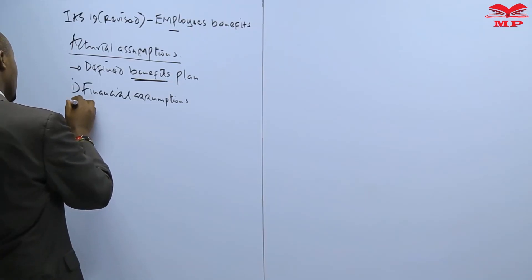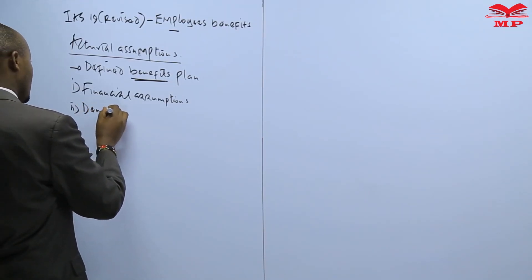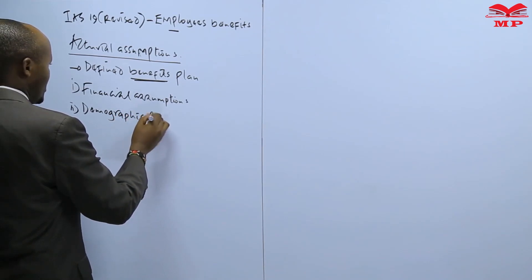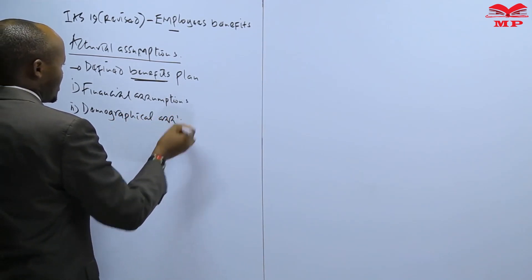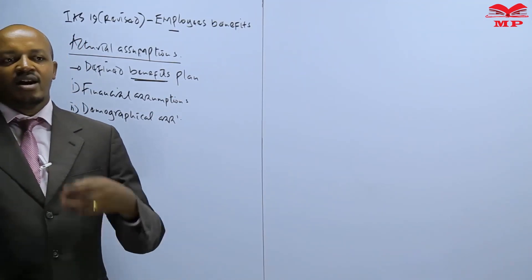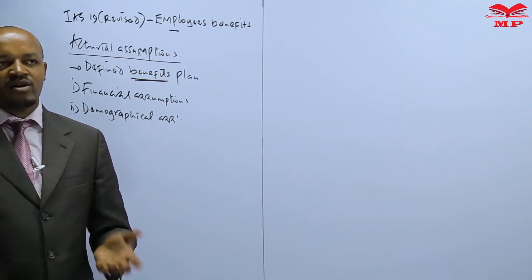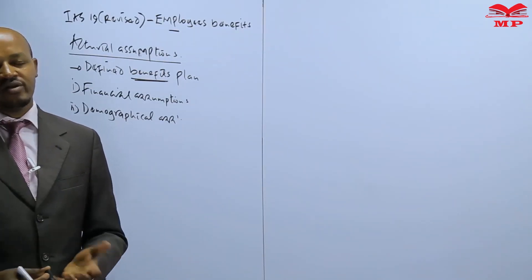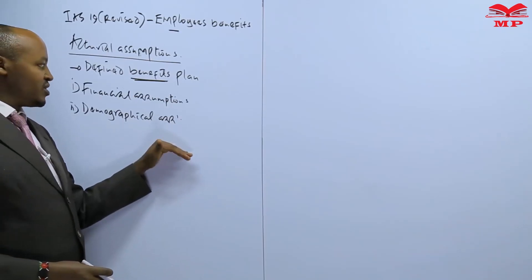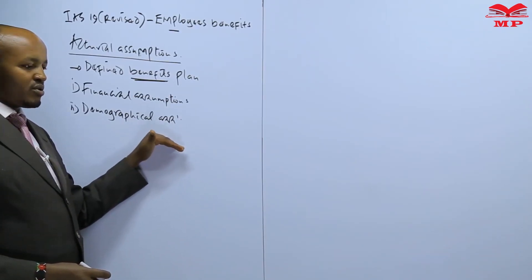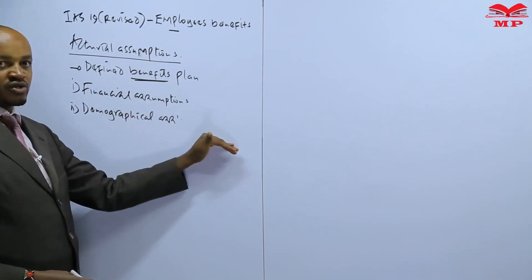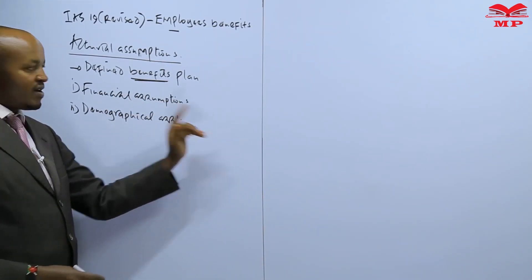On the other hand, we have what are referred to as demographic assumptions. These are assumptions concerning the expected retirement age of employees, the mortality rate, what is referred to as employee turnover — meaning employees who are expected to leave the company — and so on. Generally, these assumptions are made by the employer to determine the benefit payable to employees and the contributions he will be making.